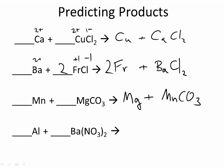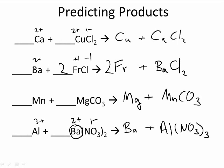How about aluminum and barium nitrate? Aluminum has a charge of 3+, and it's going to replace the other positive — barium at 2+. Nitrate has a charge of 1−. So we switch them: barium will be by itself, and then we have aluminum with nitrate — aluminum is 3+, so there are going to be 3 nitrates.